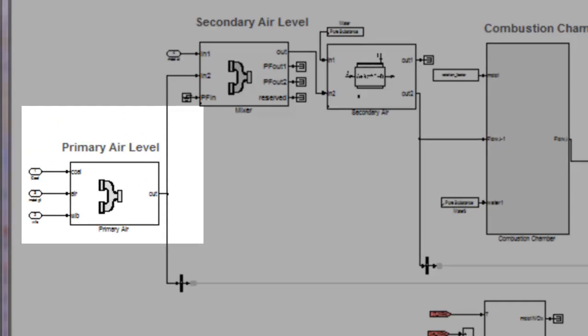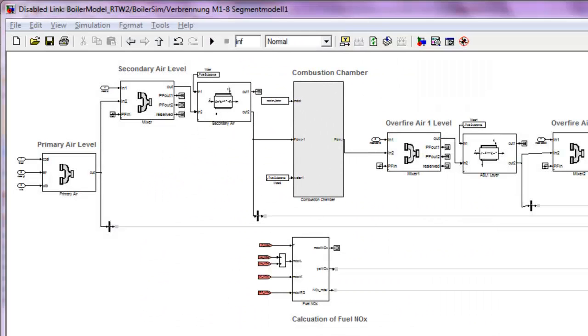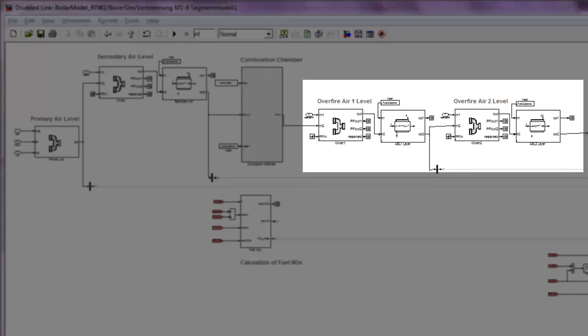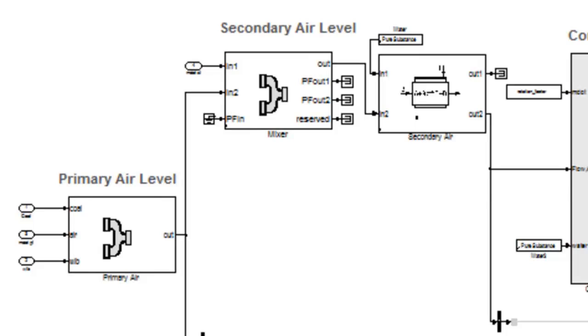The different levels of combustion are modeled. We have primary air, secondary air, the combustion chamber itself, and in this case of this particular power plant, the overfire levels one and two. At the primary level, air and coal are mixed but no reaction takes place. At the secondary level, additional air is mixed into the coal, and at this point combustion starts to take place.